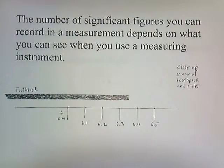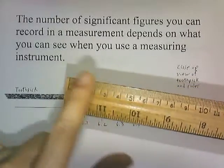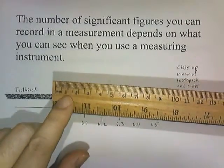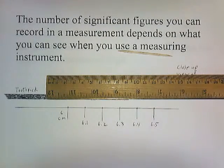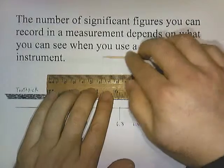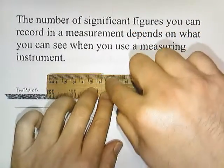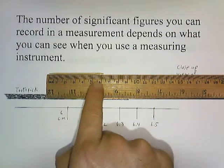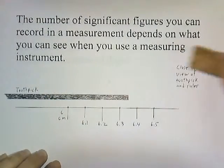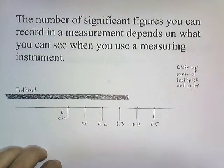The number of significant figures you can record in a measurement depends on what you can see when you use a measuring instrument. So here's a measuring instrument, a ruler with lines on it. Each individual little line is a millimeter and the big numbers are centimeters. Let's suppose I want to measure the length of a toothpick. I would put the toothpick here and look at where the end falls. Now it's hard to see because the lines are small and close together, so I've drawn a close-up view of my toothpick next to the ruler.